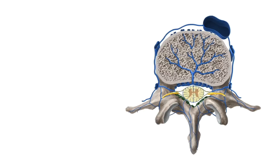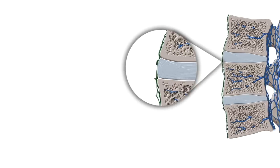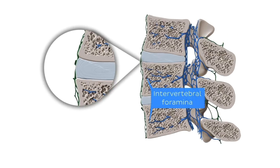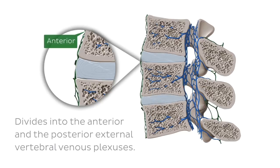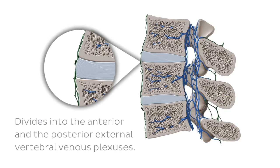Moving on to the external vertebral venous plexus, which communicates with the internal vertebral venous plexuses through the intervertebral foramina. The external vertebral venous plexus also divides into the anterior and posterior external vertebral venous plexuses. It surrounds the vertebral column and forms several connections with the azygous, the lumbar, and the deep cervical veins.